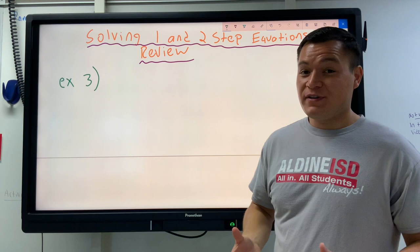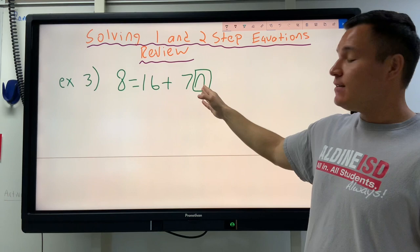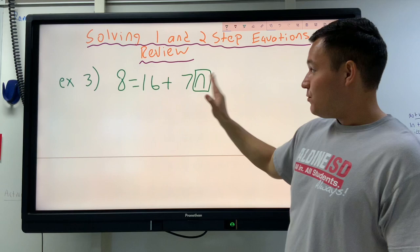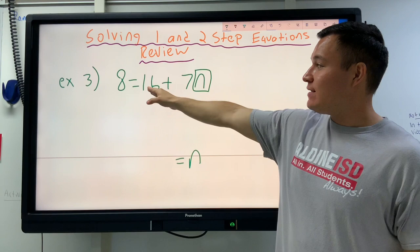We start the two-step equations the same exact way. We're going to put a box around the letter. That's the N. That's what we're going to be solving for. There are no other letters over here, so we only have to worry about this one. In the end, we're going to want N by itself equal to something else. So if we want N by itself, we need to get rid of this 16, and we need to get rid of this 7.